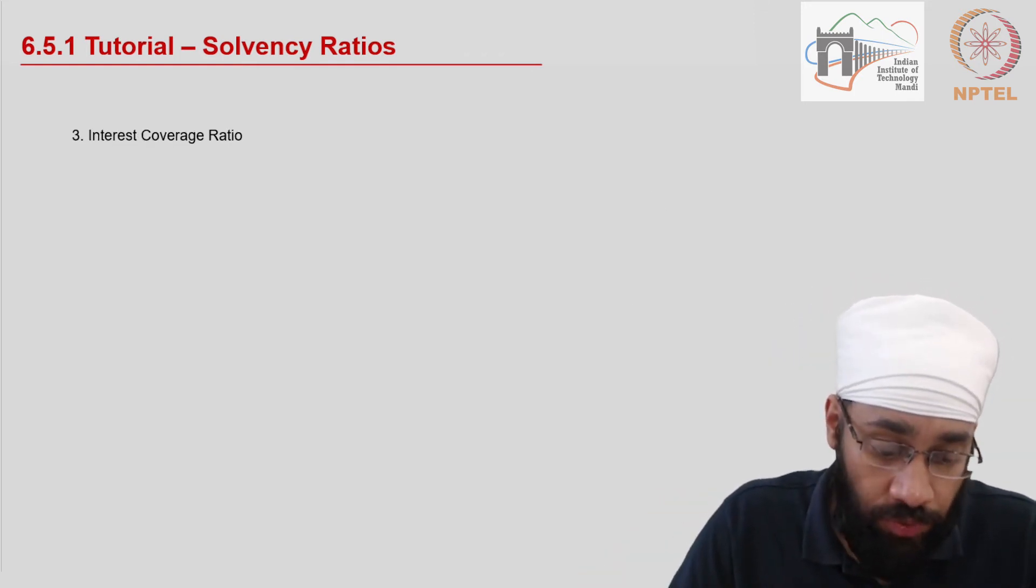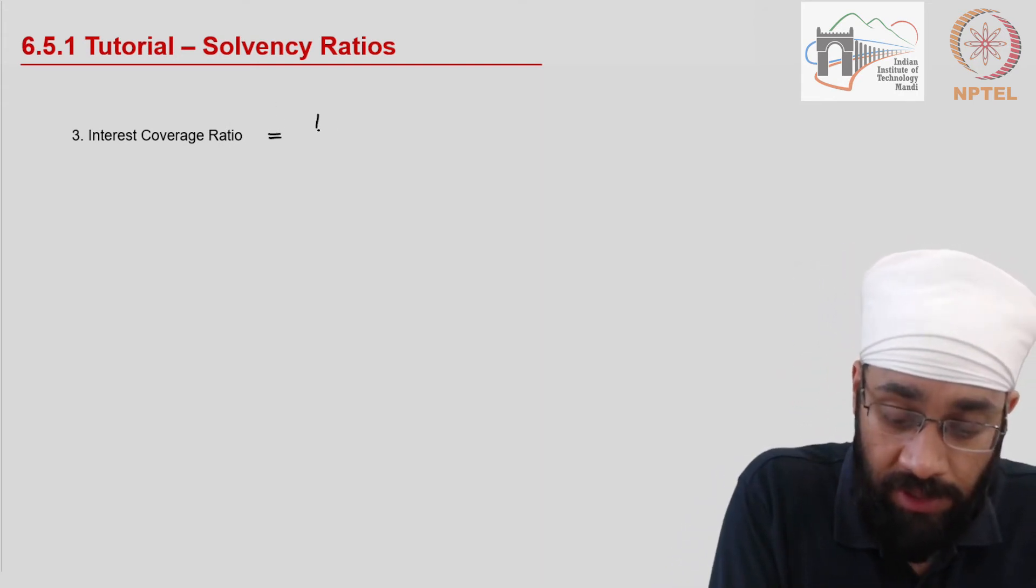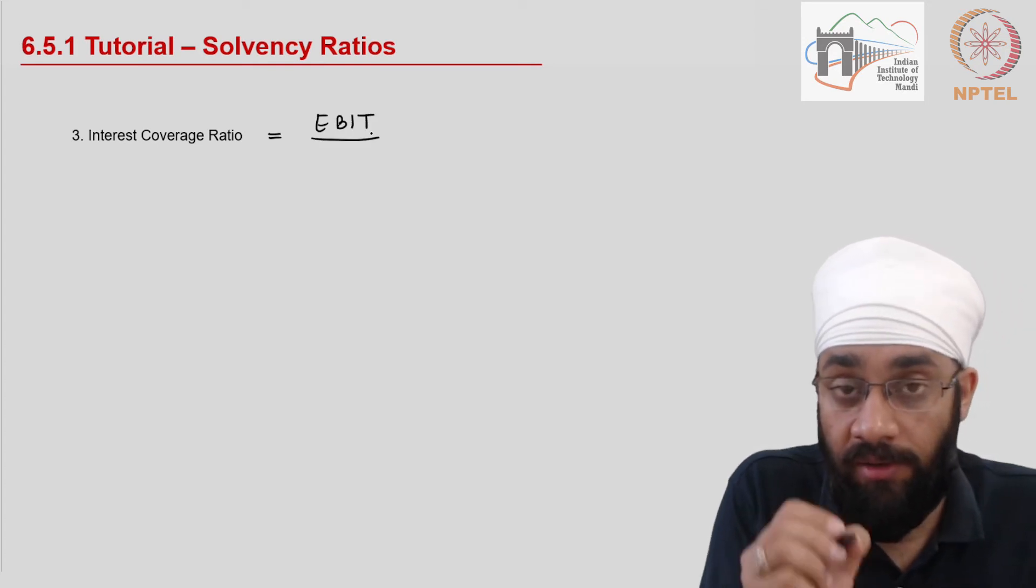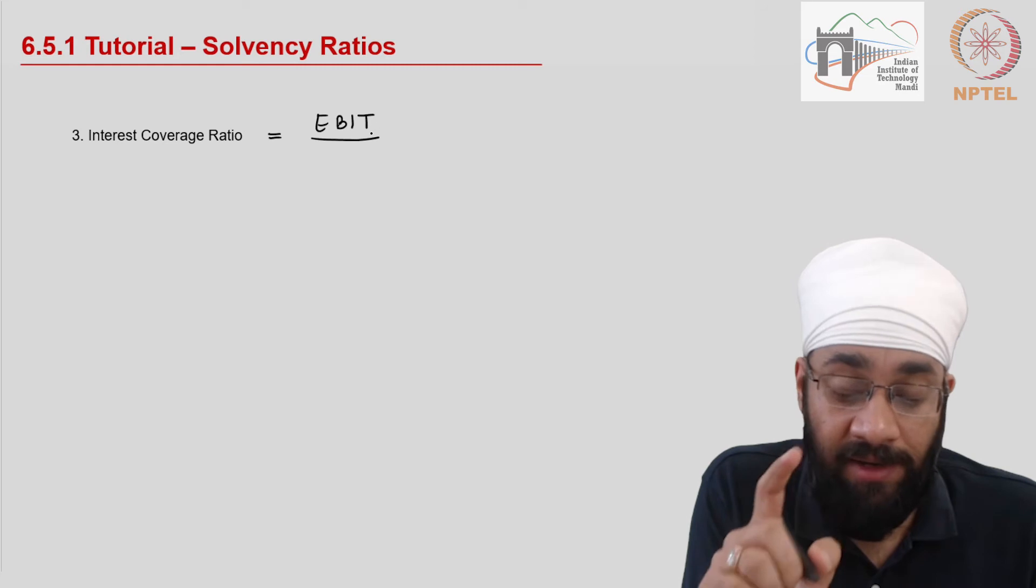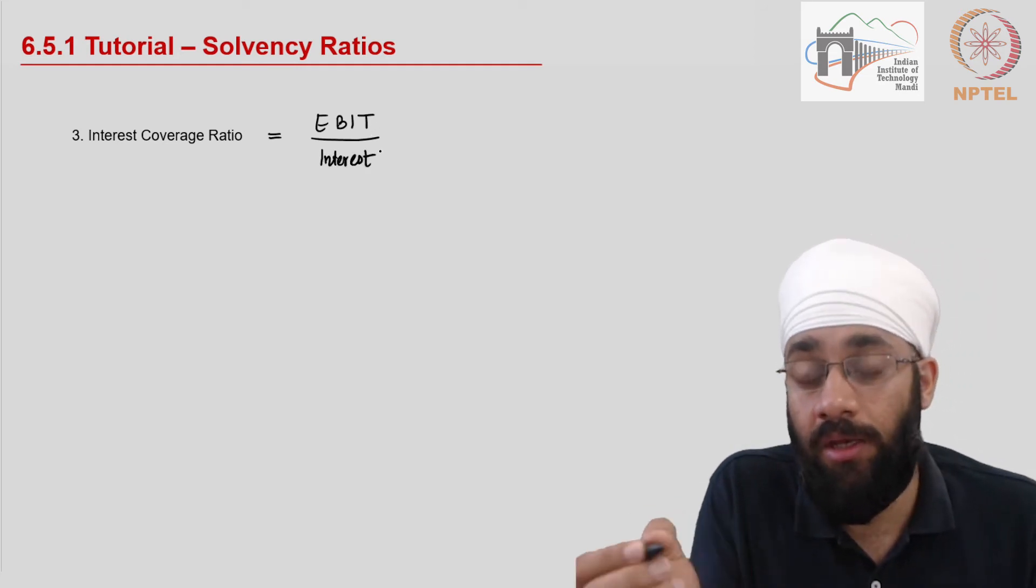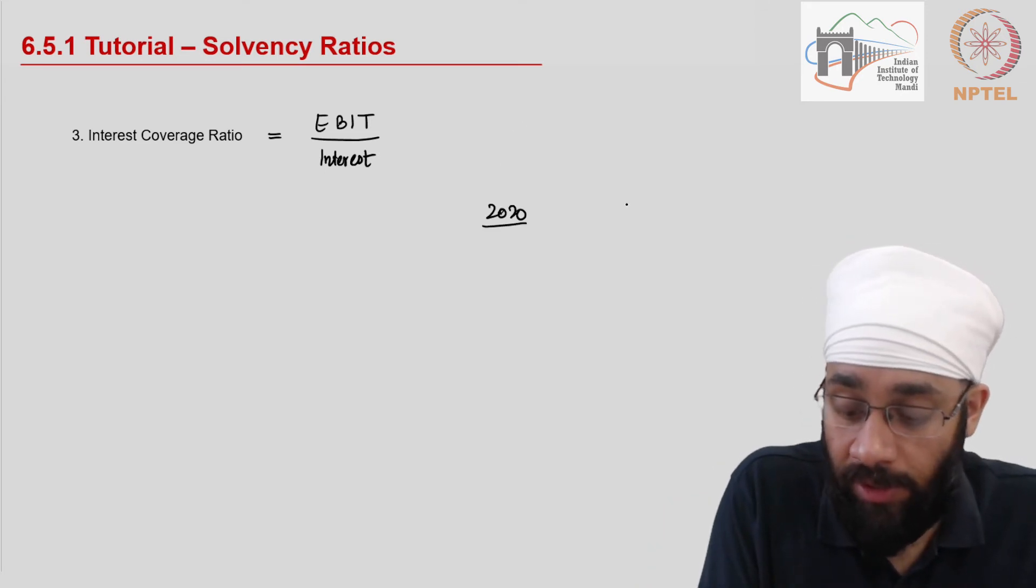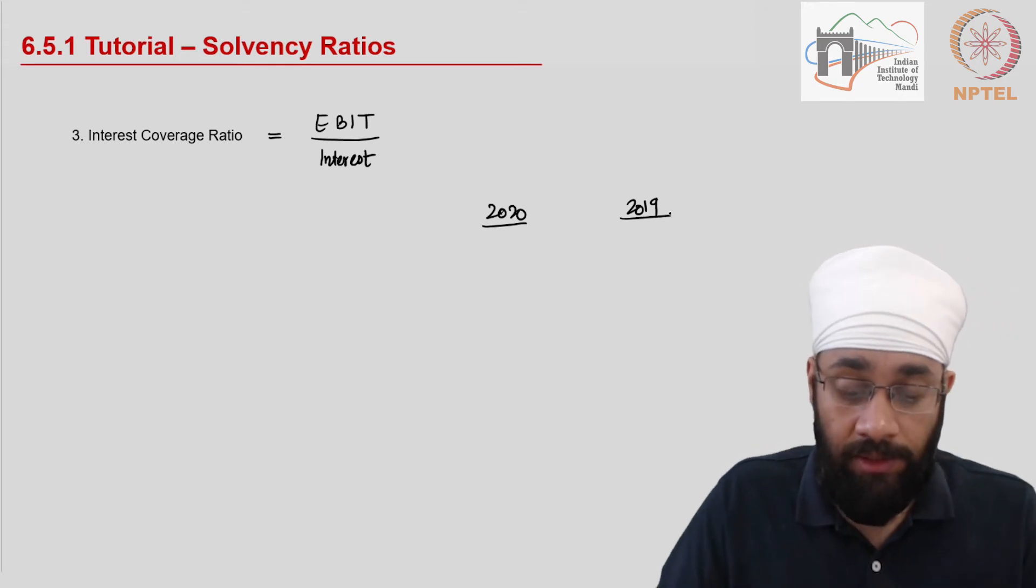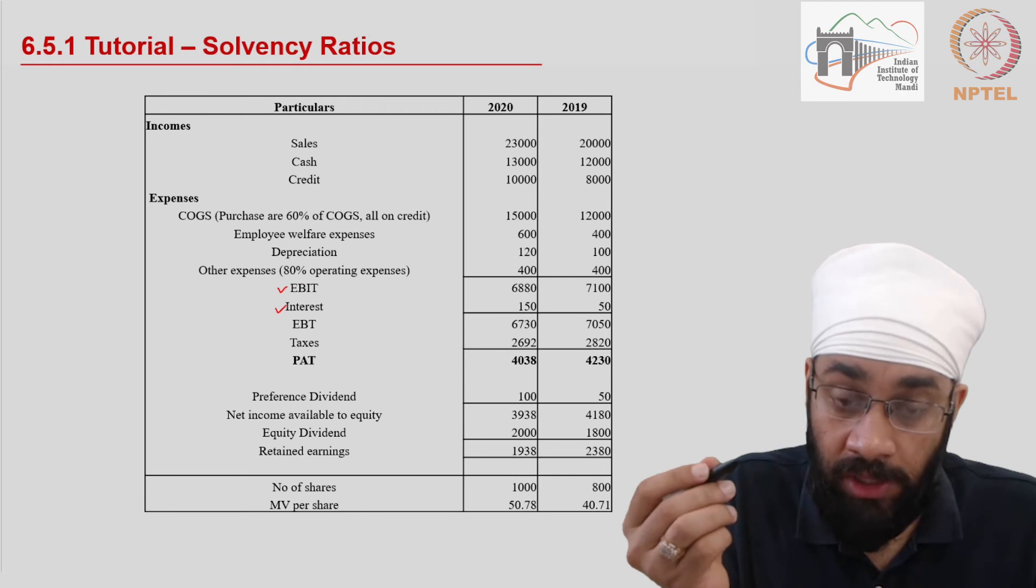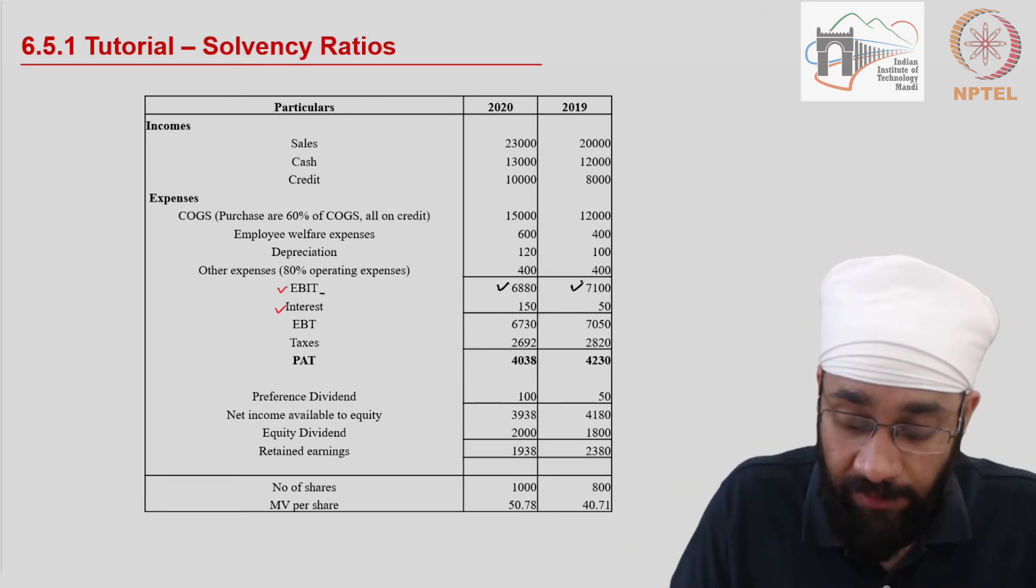So now let's go to the third ratio which is interest coverage ratio. We know the interest coverage ratio is equal to EBIT, which is earnings before interest and tax payment, and divide this by the amount of interest payable in a year. So we will do this for the two years 2020 and 2019. The EBIT here, I am now going to the income statement.